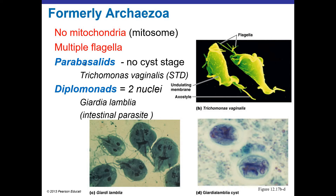Both the parabasalid and the diplomonads have multiple flagella. To the right-hand side, you see the Trichomonas vaginalis, the sexually transmitted disease. It does not have a cyst form, and that kind of makes sense because this is a disease that needs intimate contact to be able to be transmitted from host to host. The diplomonads get their name because they have two nuclei. One of the notable examples is Giardia lamblia, which is a nasty GI pathogen. But if you look at it underneath the microscope, it almost looks like a little face smiling back at you. It has this teardrop shape and flagella, and the two nuclei kind of look like googly eyes, and the cytostome actually almost looks like a mouth.